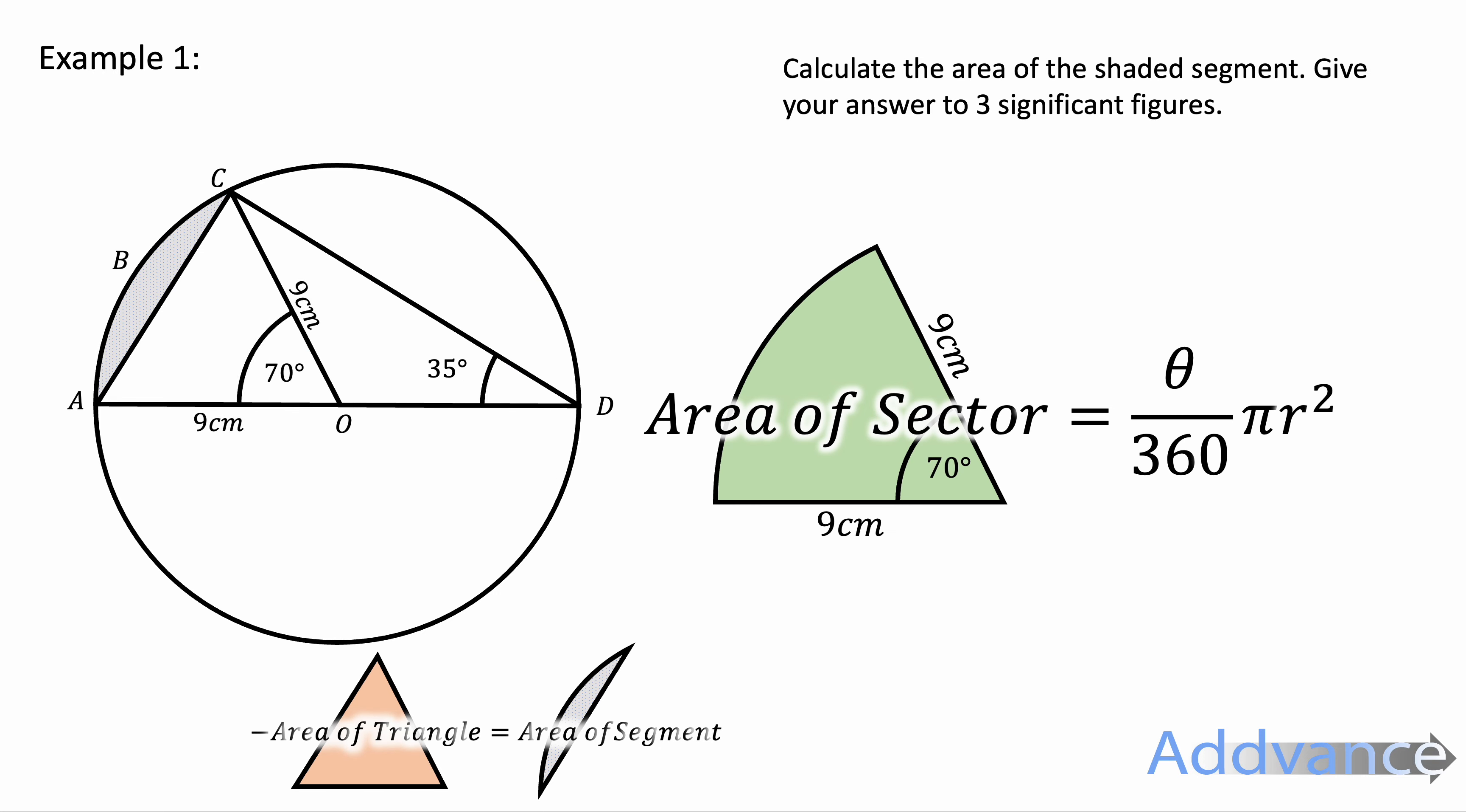Now this gives me an angle and the radius of a sector. So the sector has a radius of 9cm and an angle of 70 degrees. I can type that into my calculator.